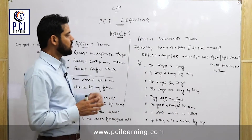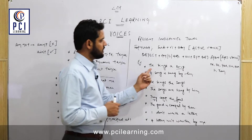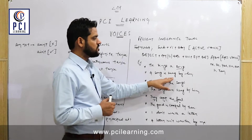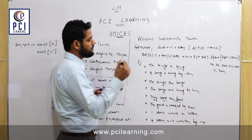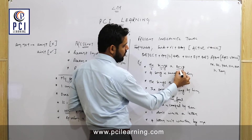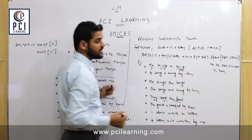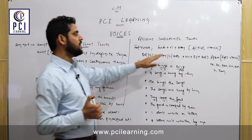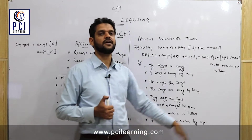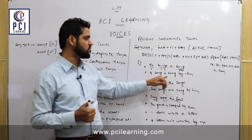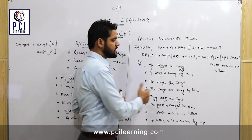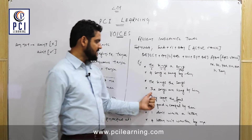The first example: 'He sings a song' — change into passive voice: 'A song is sung by him.' Here 'he' is the subject, 'sings' is the verb, and 'song' is the object. According to the formula, the object becomes the subject and the subject moves to the object position with 'by'.